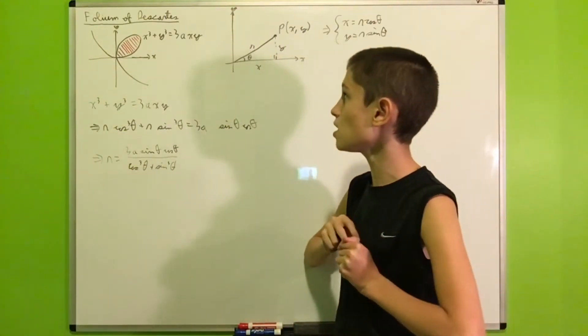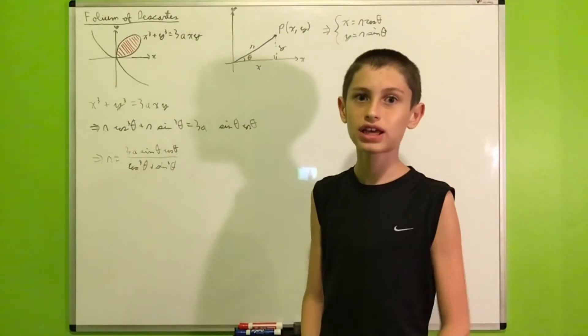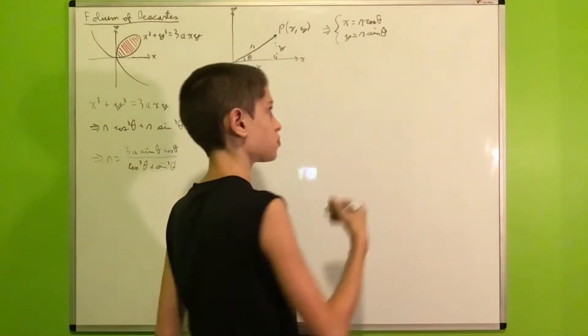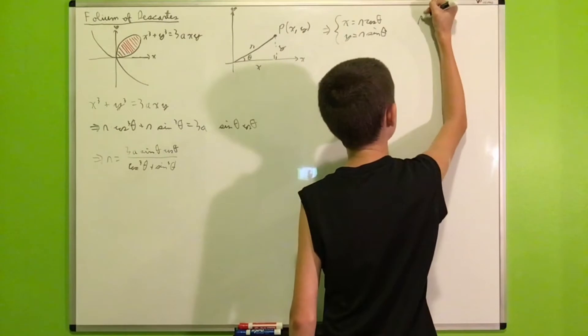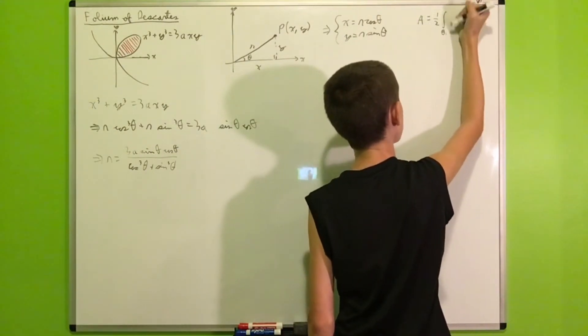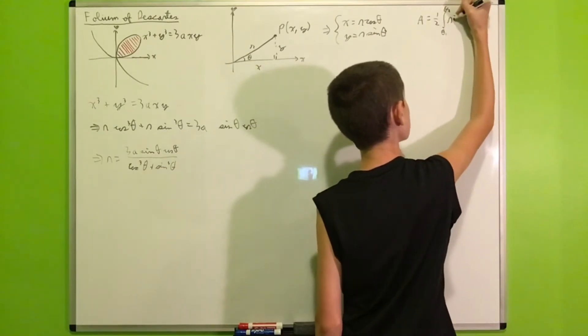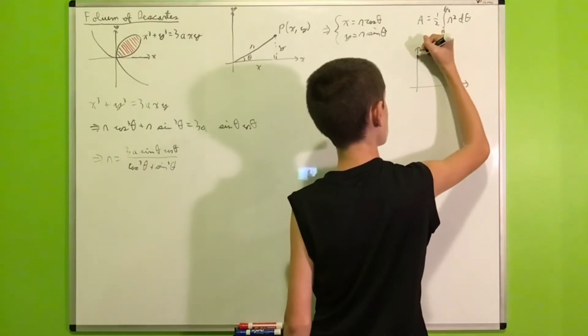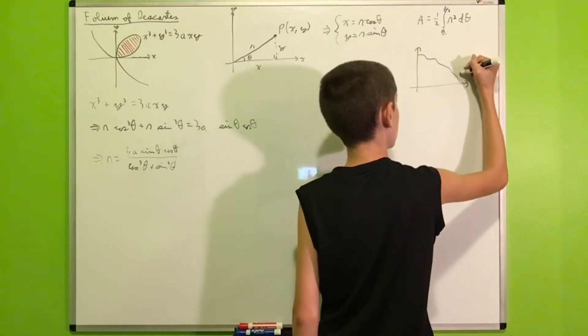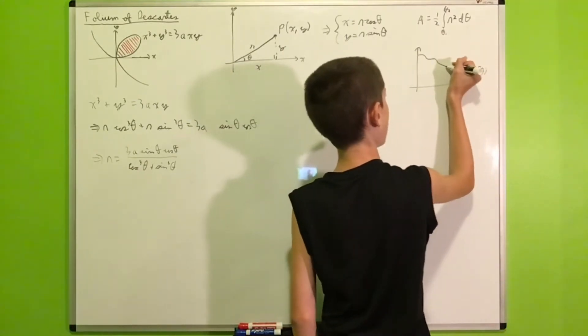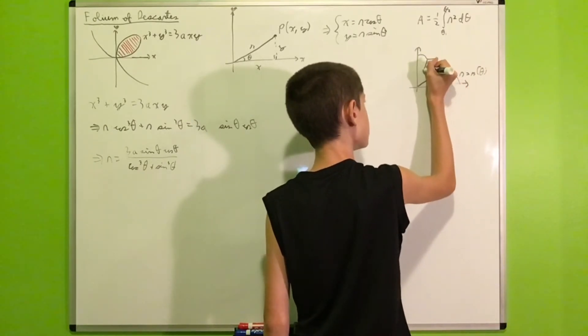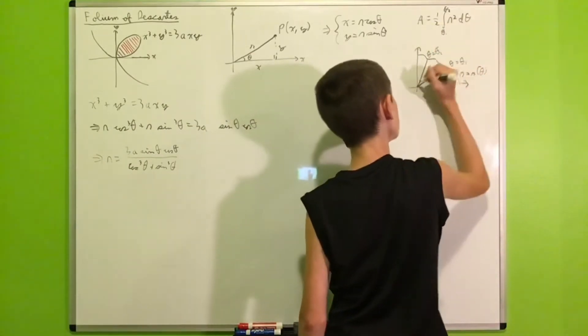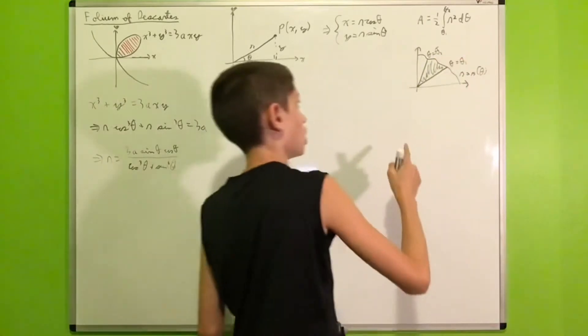And next, to find the area of our loop right here, I would like to take a look at a formula that will be very useful, the area enclosed by a function in polar coordinates. So the area will be 1 half times the integral from theta 1 to theta 2 of R squared d theta. What this means is that if you have a polar function R equals some R of theta, and you want to find the area enclosed by this function, the two lines theta equals theta 1 and theta equals theta 2, this area right here, well, you can use this formula.